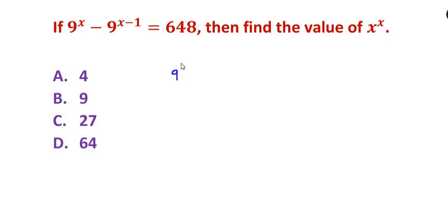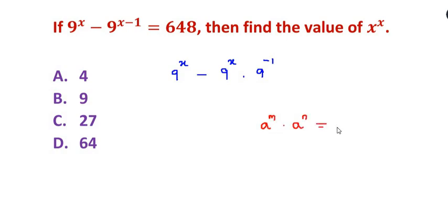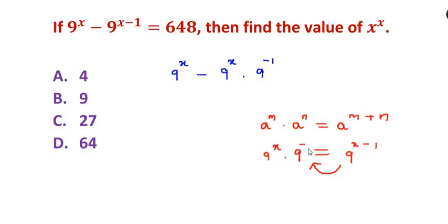Let's start solving. The first term is 9 to the power of x. The second term, 9 to the power of x minus 1, can be split and written as 9 to the power of x times 9 to the power of minus 1, because according to the rule of indices, a^m times a^n equals a^(m+n). So reversing that law, 9^(x-1) = 9^x times 9^(-1).